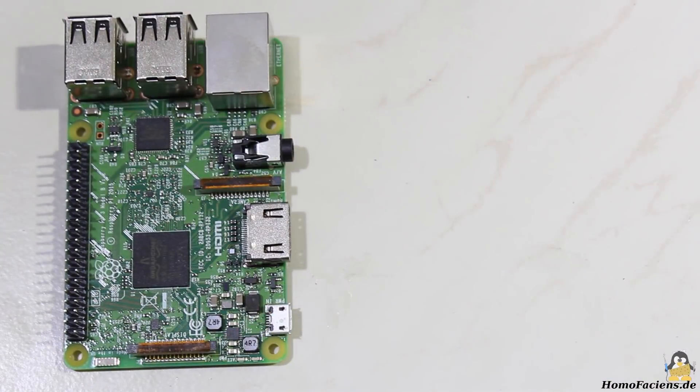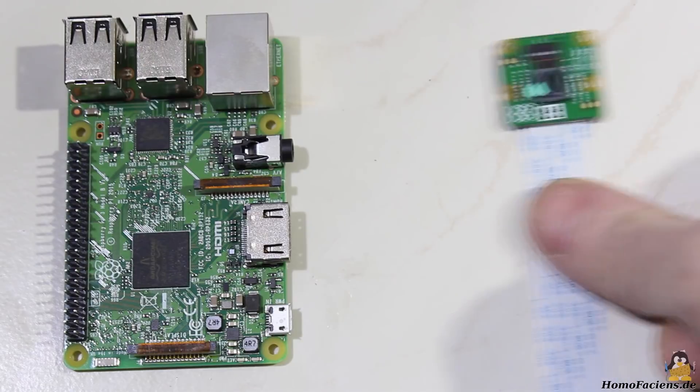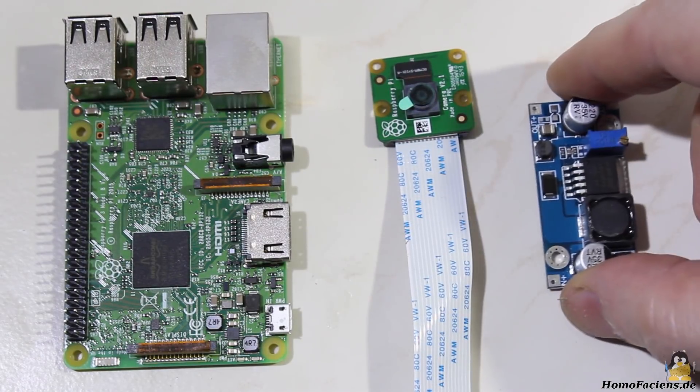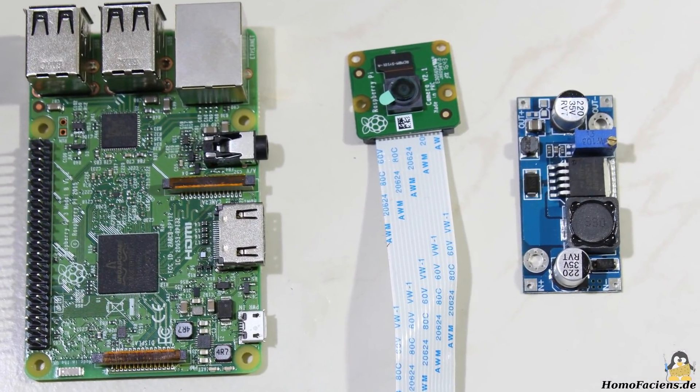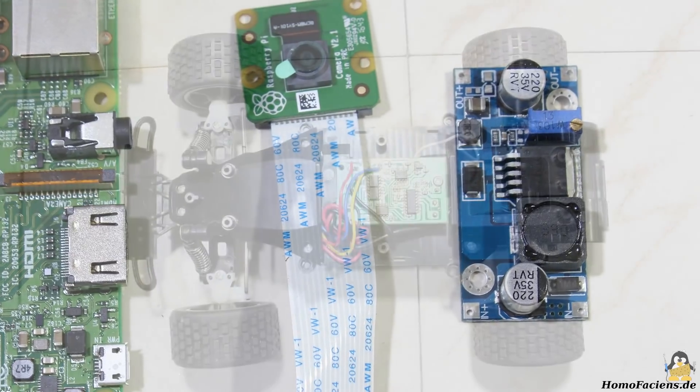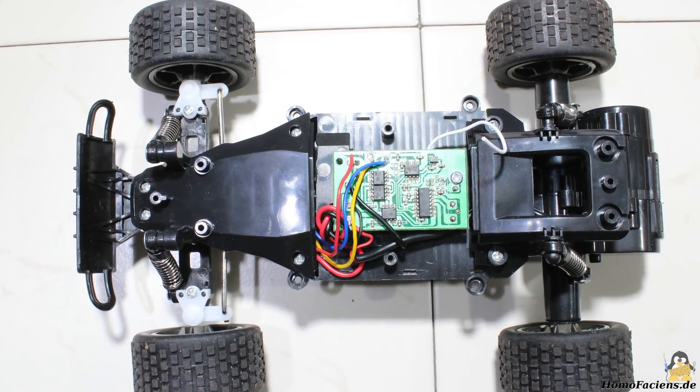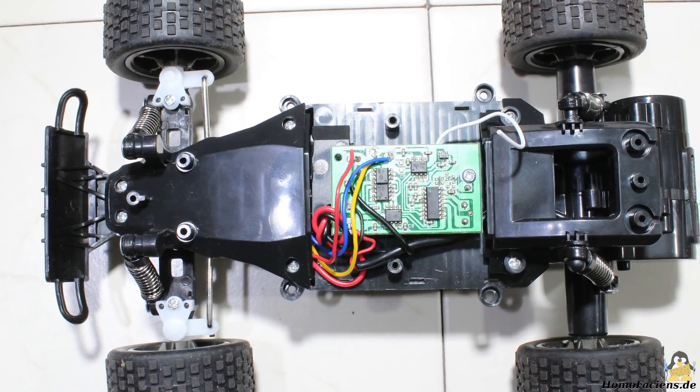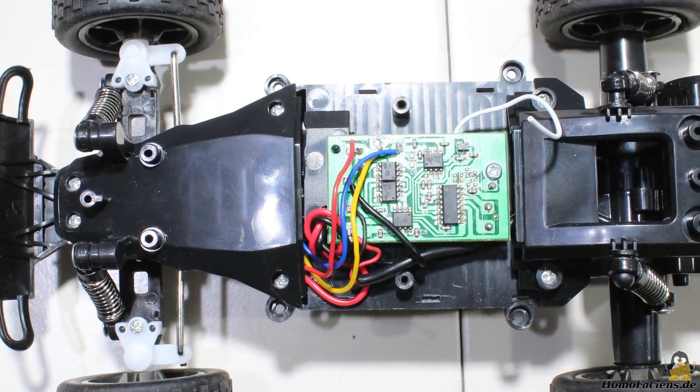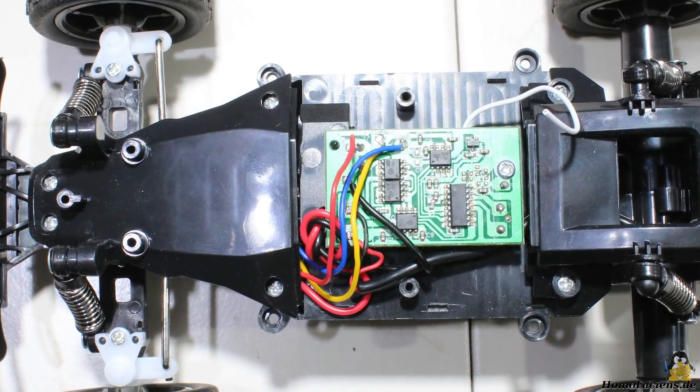For the conversion I got a Raspberry Pi model 3 with a camera module from my sponsor. Furthermore I am using a DC converter to get a constant input voltage of 5V for the Raspberry Pi. You can use the power electronics of the model car to control the drive and steering. I couldn't find a datasheet for the chips on the board, so I had to guess and gauge.